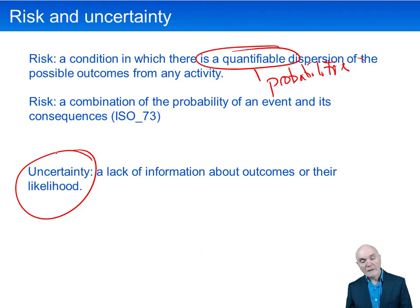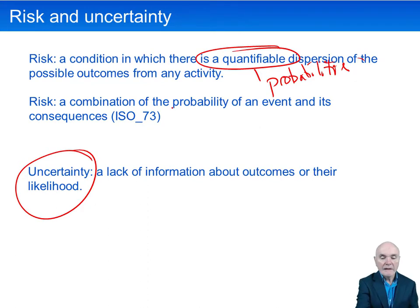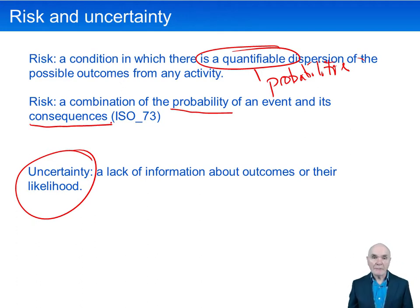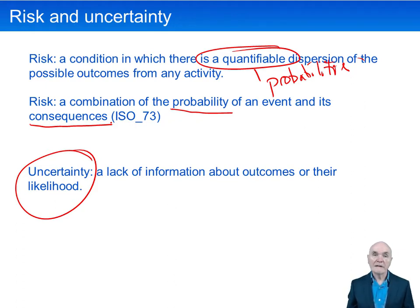When we consider the impact of risk, it really has two components. There is a probability that the event will happen, and then there is the consequence — or consequences — that take place if it does happen.